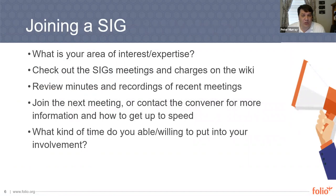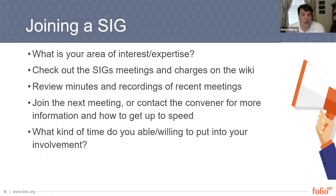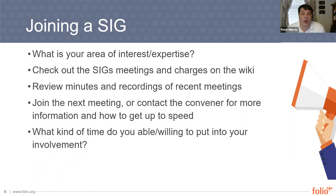Whether you are considering joining a Folio SIG or are watching this video because you've recently joined one, here are some things to consider. First, what is your interest and expertise? Folio probably has a SIG that covers that area. If not, the community has intentionally made the process of forming a SIG as simple and as low a barrier as possible. On the next slide, I'll show you how to find the list of active SIGs in the community. Once you have an idea of an area, look on the wiki for the minutes of past meetings and a link to meeting recordings. That will give you an idea of the topics being decided in the SIG and who is participating. The next step is to simply join the next meeting, and if you have any questions, you can contact the SIG convener or any member of the SIG.